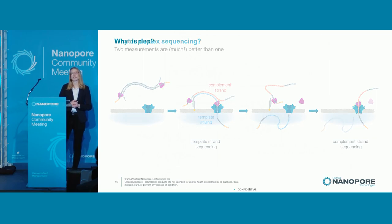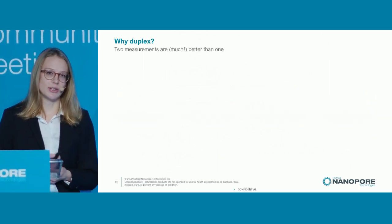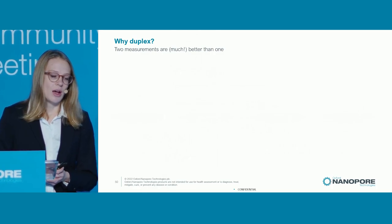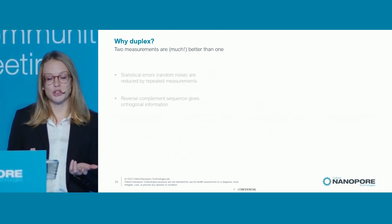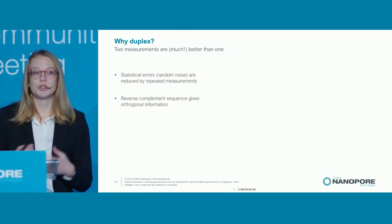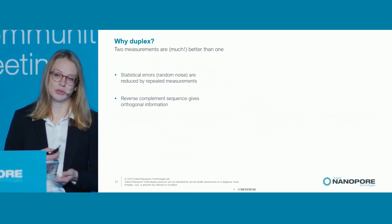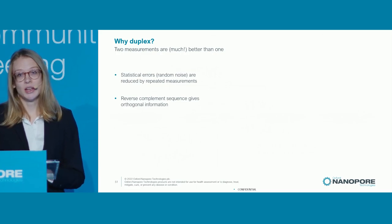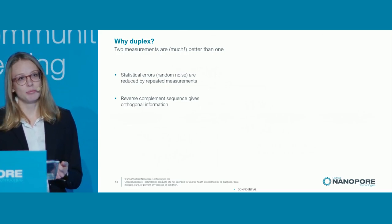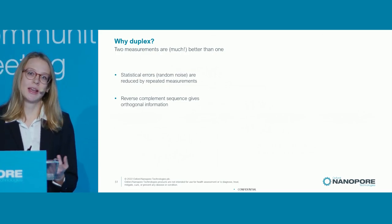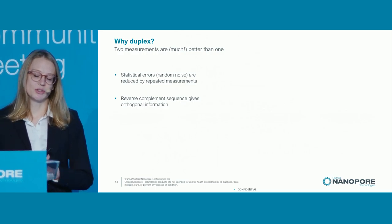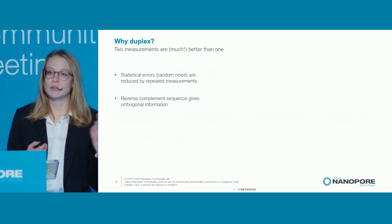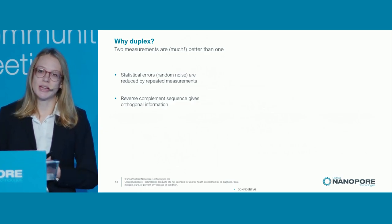Let's get a bit of intuition on why duplex sequencing produces such gains in accuracy. One factor is simply that two measurements of the same molecule help to reduce random errors due to statistical noise. But there's a second effect where the reverse complement strand, because it has different bases and because it moves through the pore in the opposite direction, really does contain orthogonal information — different than two copies of the template strand would be.